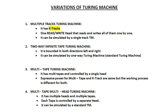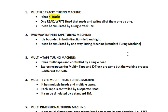Moving on, the next variant is the Two-Way Infinite Tape Turing Machine. In a general Turing machine, the tape is open on both sides for read and write operations, bounded in both left and right directions. It can also be simulated by a one-way Turing machine, where the tape moves left to right and right to left.